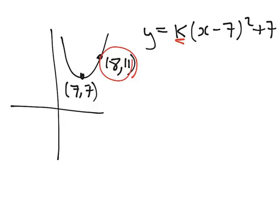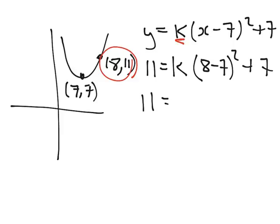That's okay because we can do that using this fifth value here to do the calculation. We simply replace x and y in the equation with 8 and 11. So 11 equals some number k, and x is actually 8 minus 7 squared plus 7. So 11, 8 minus 7 is 1 squared is just 1 equals k plus 7, so k must equal 4.